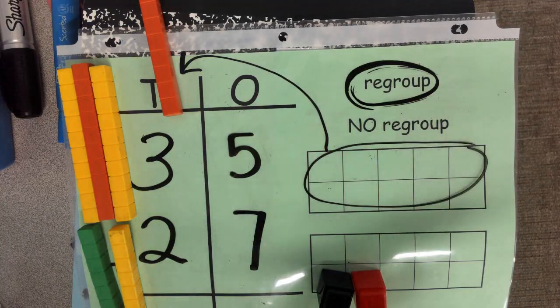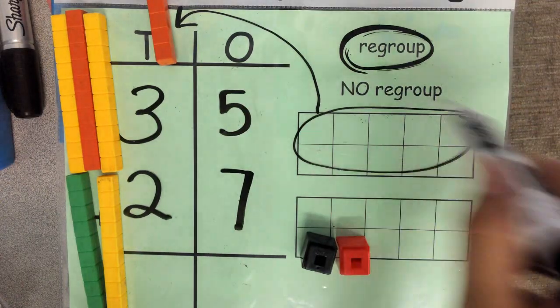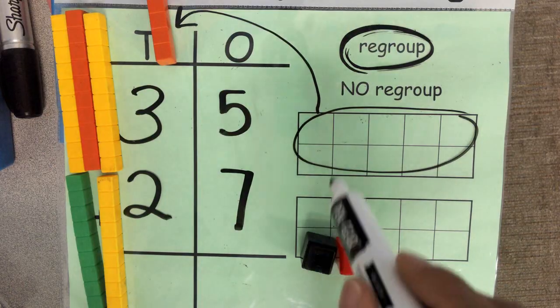I had to regroup. Well, five plus seven we know now is ten and two, that's twelve. Five plus seven is twelve.